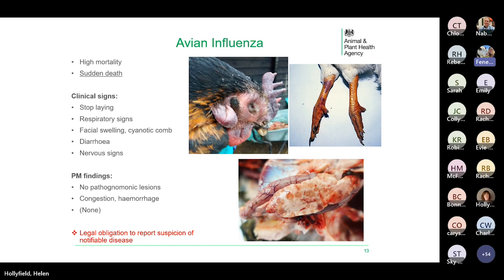Avian influenza — highly pathogenic AI causes high morbidity and high mortality in chickens. Infected birds may stop laying, may have respiratory signs, facial swelling, a cyanotic comb, diarrhoea which could be green, and occasionally nervous signs of paralysis or tremor. But sudden death without clinical signs is a key feature. The photographs show AI-infected birds: top left shows cyanosis and swelling of the face and wattles giving a blue discolouration; top right shows purple discolouration of the legs due to subcutaneous haemorrhages.